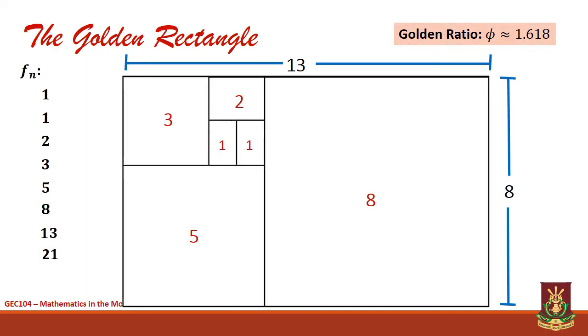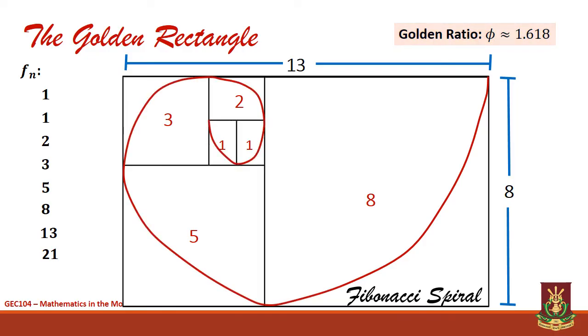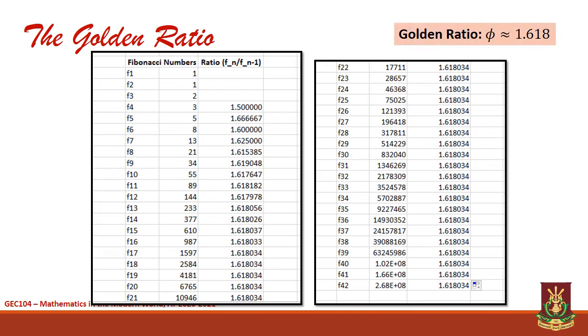If we break down a golden rectangle into smaller squares based on the Fibonacci sequence and divide each with an arc, we begin to see the Fibonacci spiral. It is also interesting to see that the quotient obtained when a Fibonacci number is divided by its preceding term is a number that is very close to the golden ratio.